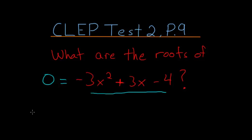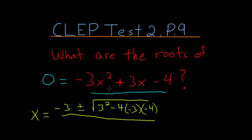So we have x equals minus the coefficient on the x term, so -3, plus or minus the square root of this same coefficient squared, so 3², minus 4 times the coefficient on the x² term, which is -3, multiplied by the constant term, which is -4. And then this is all divided by twice the coefficient on the x² term, so -3.